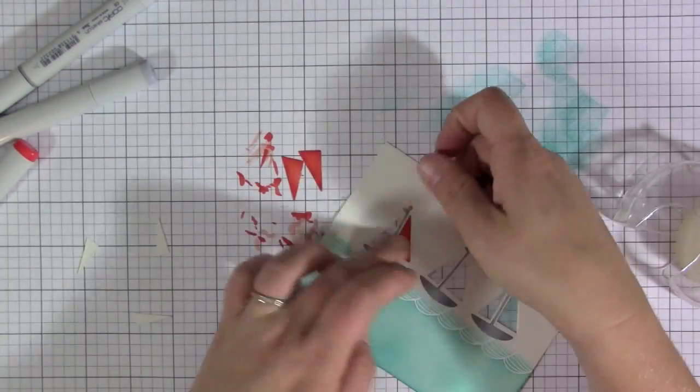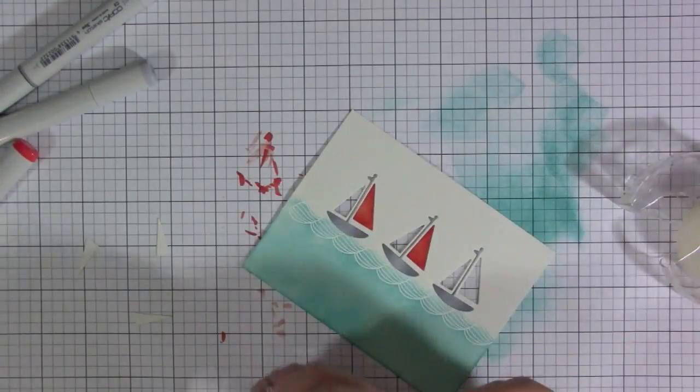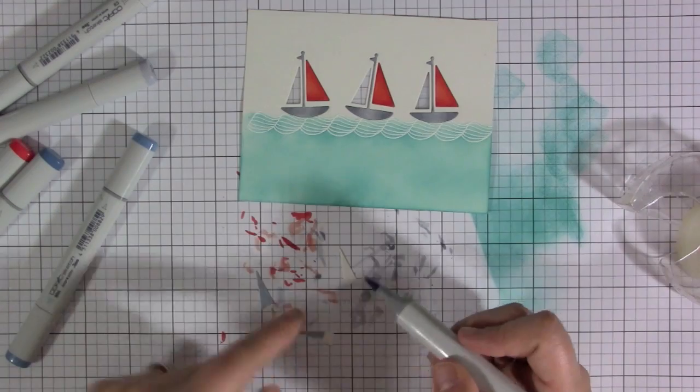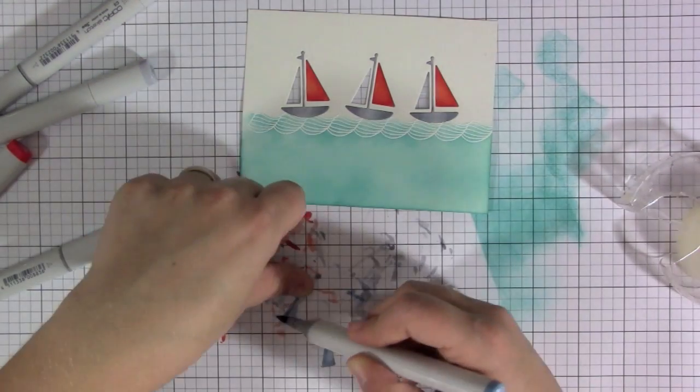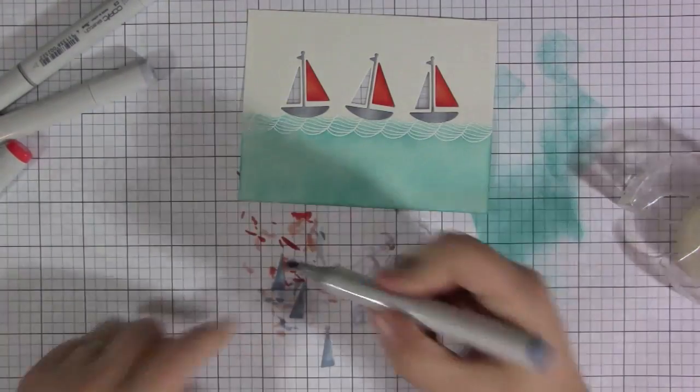Then you can just throw out that outside piece once you have everything colored. It just depends what you prefer. If you don't want to get inked fingers, then that's probably an easier way to do it.